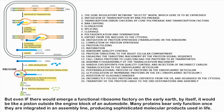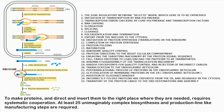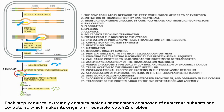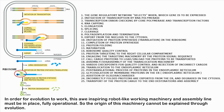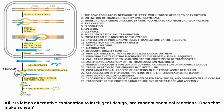Even if a functional ribosome factory emerged on the early Earth by itself, it would be like a piston outside the engine block of an automobile. Many proteins bear function only once integrated in an assembly line producing sophisticated molecular products. To make proteins and direct and insert them to the right place requires systematic cooperation. At least 25 unimaginably complex biosynthesis and production-line-like manufacturing steps are required, each requiring extremely complex molecular machines composed of numerous subunits and cofactors — making its origin an irreducible catch-22 problem. This machinery cannot be explained through evolution; all that is left as an alternative explanation is intelligent design.